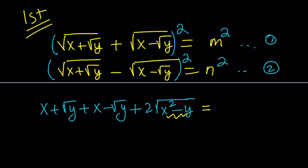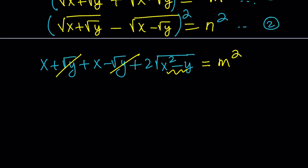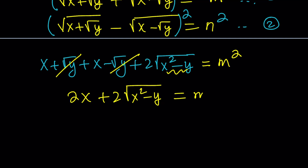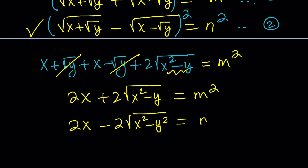So this gives us m squared. Notice that the square root of y cancels out and we get 2x plus 2 times the square root of x squared minus y equals m squared. If you do the same thing with the second equation, root y cancels out again but this time you get the same thing with a minus sign — because these two are conjugates, their squares are also conjugates.